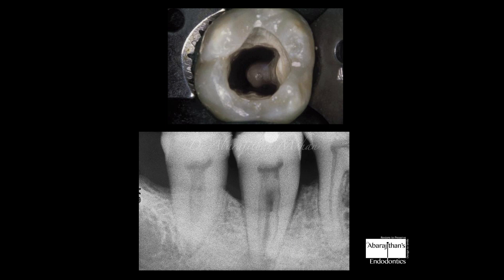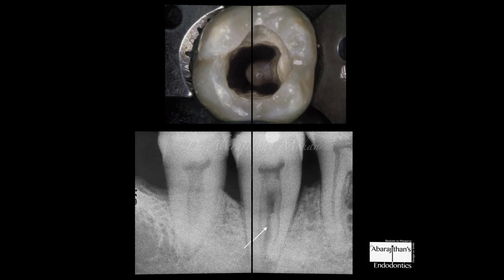What is interesting about the C-shaped canal is that on a radiograph you will actually see two separate roots with a delineation between them. But clinically you will see a communication between the mesial and distal — you can even run a file from the mesial to distal without taking it out of the orifice. To understand the C-shaped anatomy better, let me show a video on an extracted tooth demonstrating this common type.